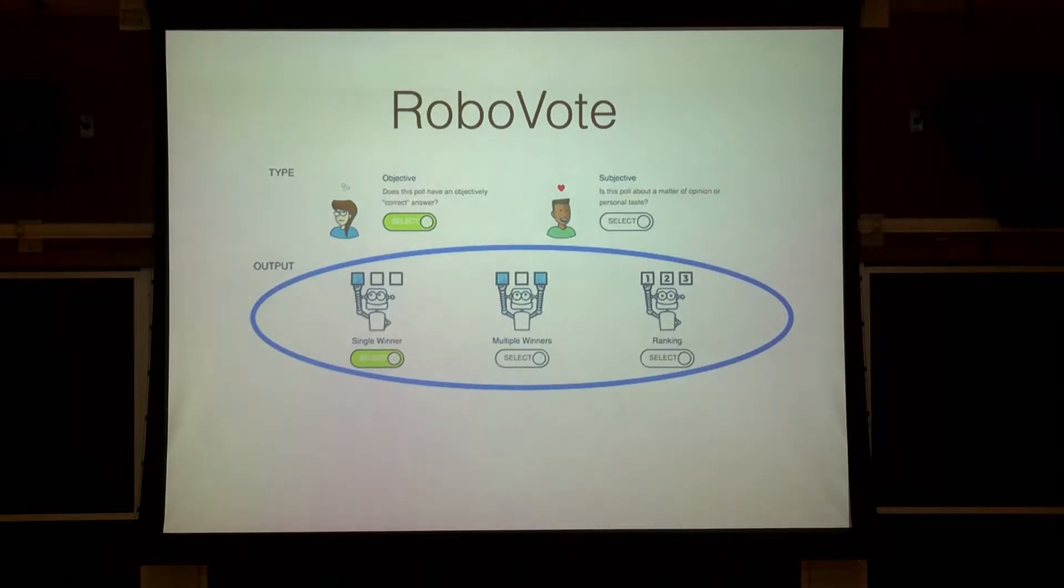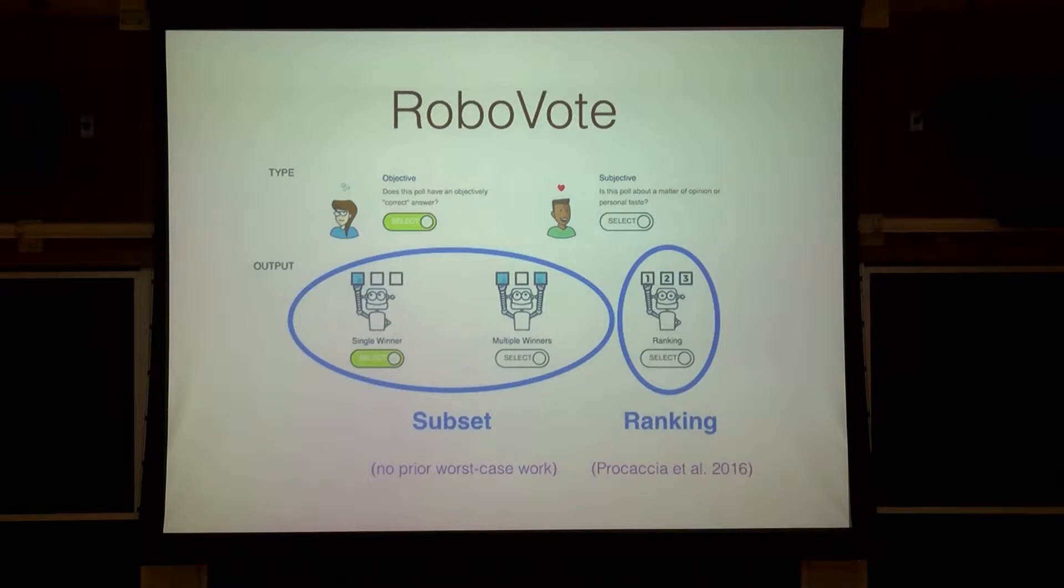After the two actual types of polls, there are three types of output on RoboVote. The first is a full ranking. So you want to basically recover the entire set of ordinal preferences over all the alternatives. And the second type is what we termed the subset setting, where you can either have multiple winners or a single winner, where the single winner is just the subset of size one. And there is previous theoretical work on rankings done last year by my advisor, but there was no previous work prior to this on subsets.